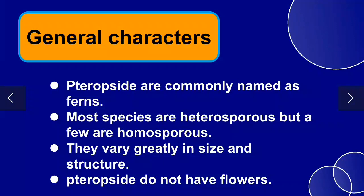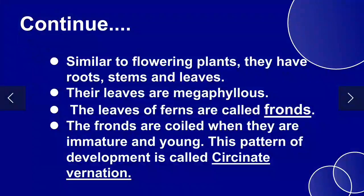General characters: Tracheophytes are commonly named as ferns. Most species are homosporous; some are heterosporous. Their size and structure may vary greatly from species to species. Pteropsida do not have flowers, though their characters may show resemblance with flowering plants. They have roots, stem, and leaves. Their leaves are megaphyllous. Young immature leaves show a pattern of development called circinate vernation.